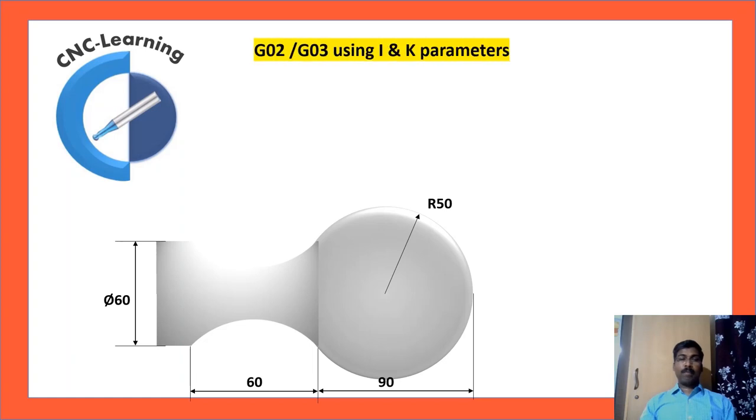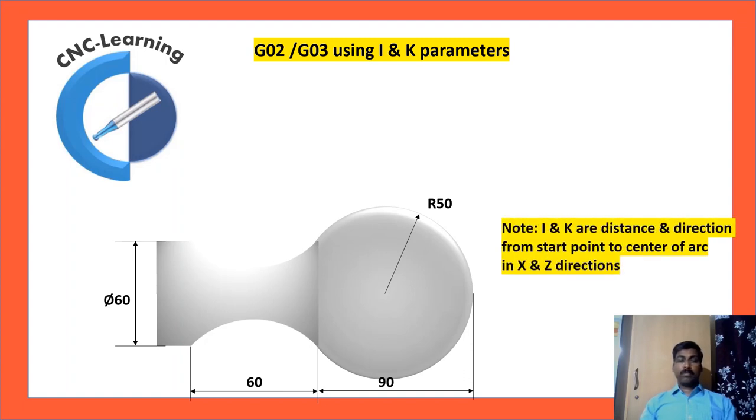Same example, now we will see with I and K parameters. What is I and K parameters? I and K are distance and direction from start point of the arc to center of the arc in X and Z directions.